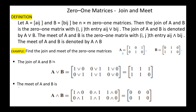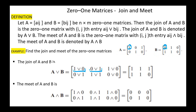Example: find the join and meet of the 0-1 matrices A and B. The join of A and B, A join B, is computed entry-wise using OR: 1 OR 0, 0 OR 1, and so on. The result is the matrix 1, 1, 1, 1, 1, 1, 0.